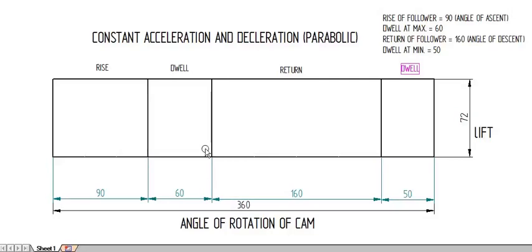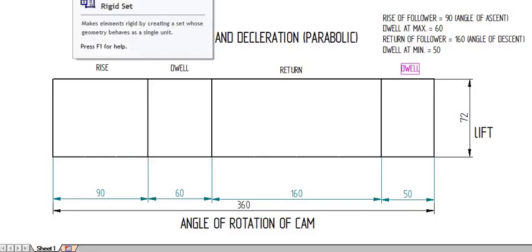For drawing a constant acceleration and deceleration curve, one thing you have to keep in mind is that you have to divide this section into an even number of halves — it can be 4, 6, 8, or 10. The rise of the follower is 90 degrees, so I am dividing this into 6 equal halves. The only condition is that we divide into an even number of halves. I have already divided it.